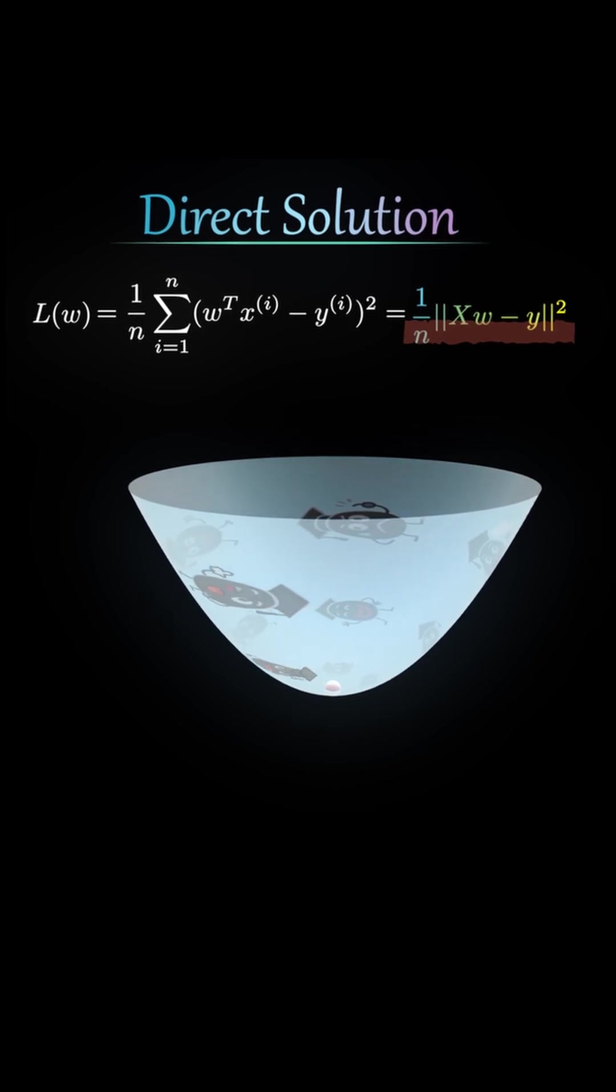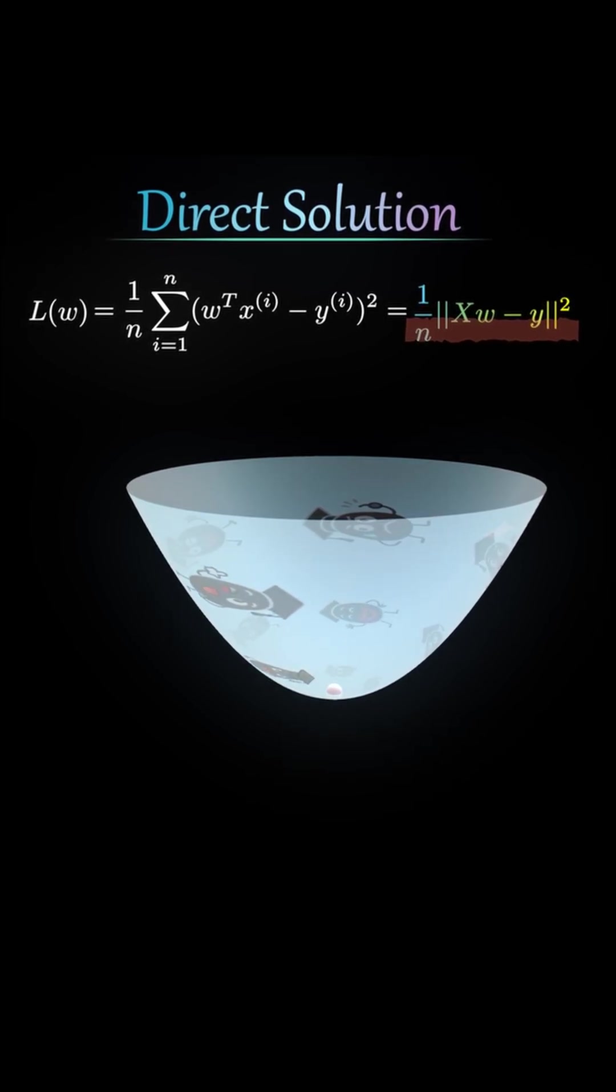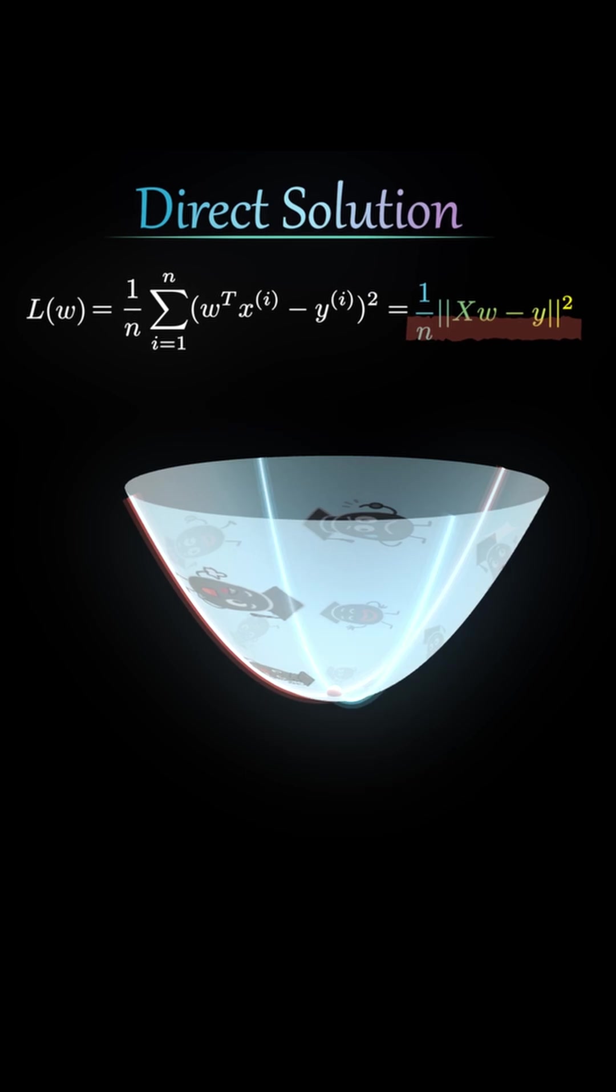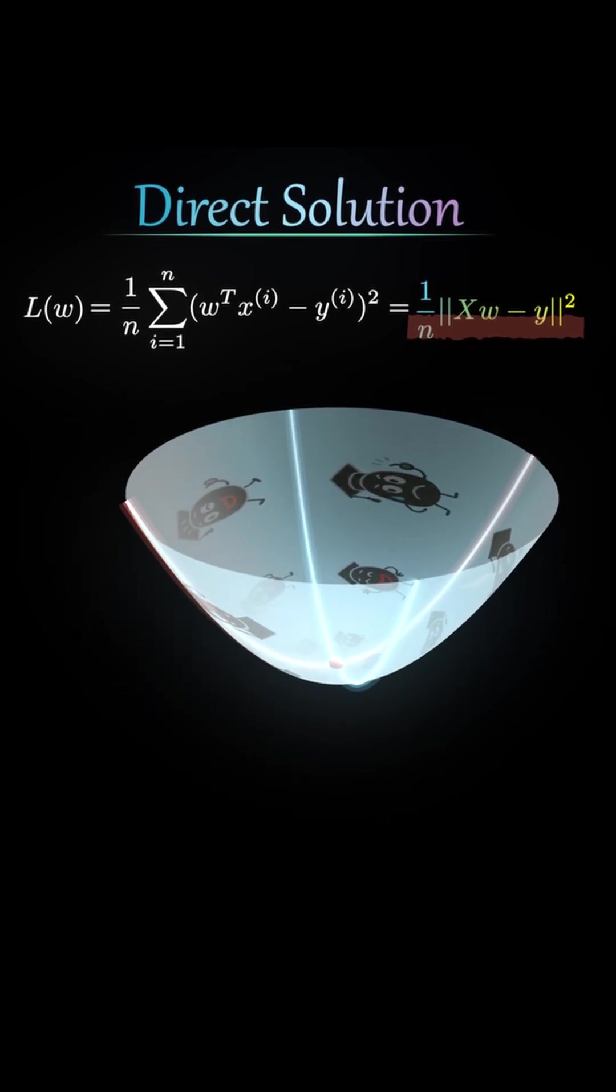Remember, last time we looked at a 3D graph of L and we saw that it was a bowl-shaped surface, convex with respect to both components of w.